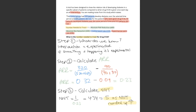What we need to do is work out our control first. We have 320 patients that develop diabetes — that goes on top — divided by the total sample size. The total sample size is 320 patients who developed diabetes plus 680 patients who did not, giving us our CER, our control event rate. Then we work out our experimental: 90 patients develop diabetes, so it's 90 divided by 90 plus the 910 patients that didn't develop diabetes.